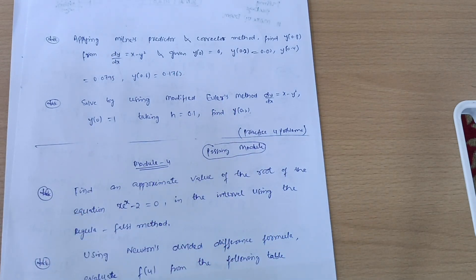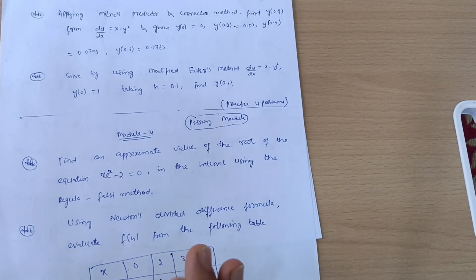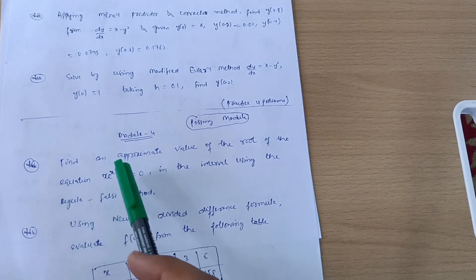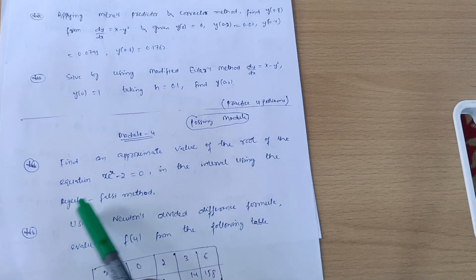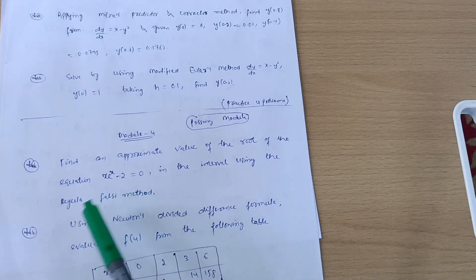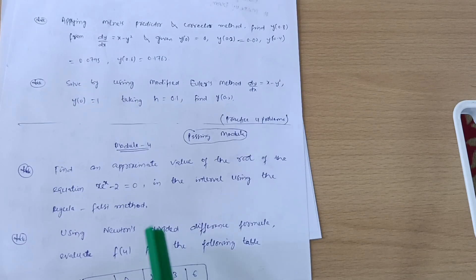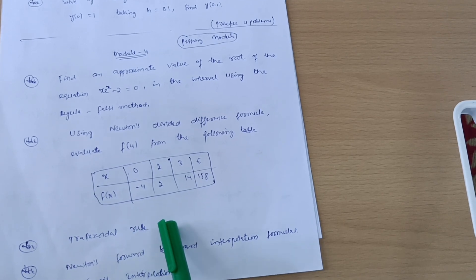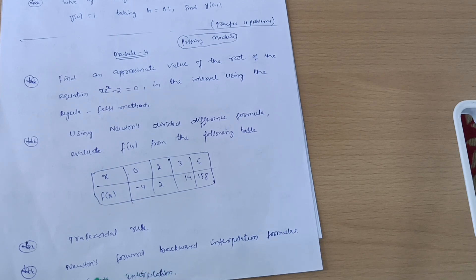20 marks you should surely get from Module 5. Next is the passing module — Module 4. Find an approximate value of the root of the equation xe^x − 2 = 0 in the interval using the Regula Falsi method. Using Newton's divided difference formula, evaluate f(4) from a given table. Also go through the trapezoidal rule — three to four problems — Newton's forward and backward interpolation formula, and Lagrange's interpolation formula.